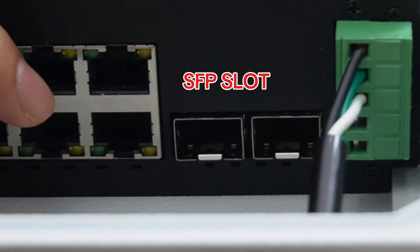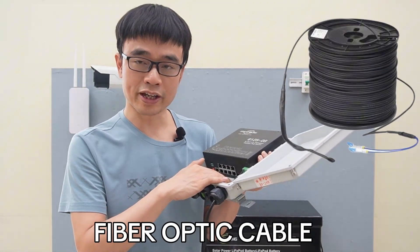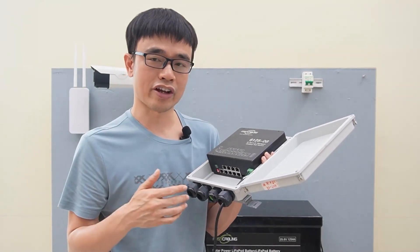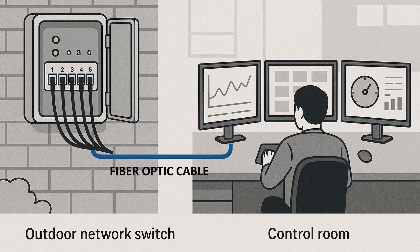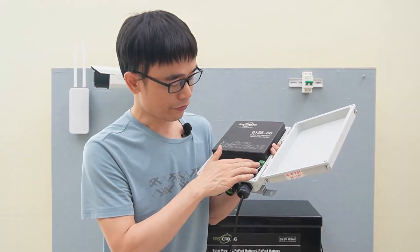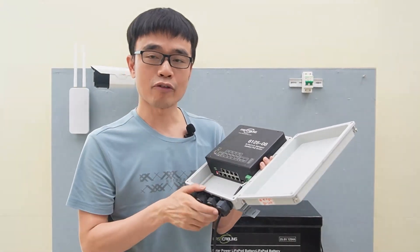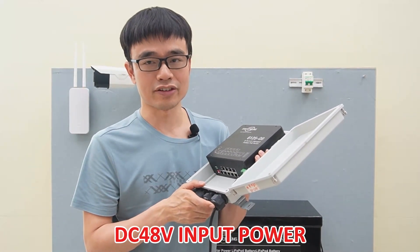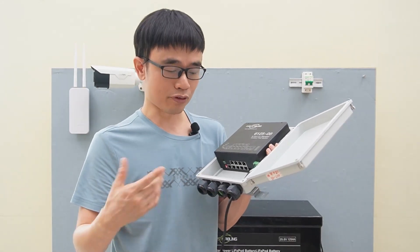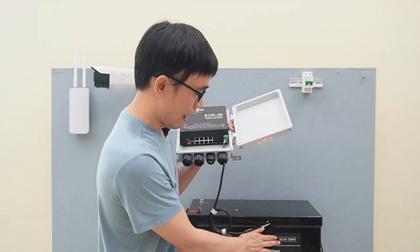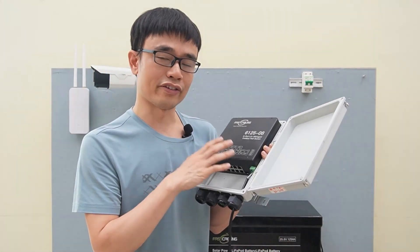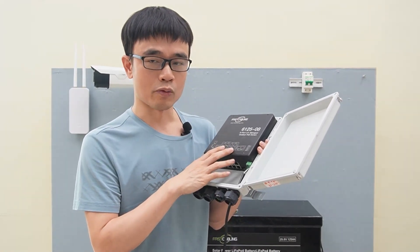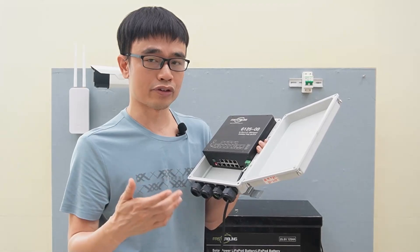These two are the SFP slots. We plan to use fiber optic cable. The SFP slots are designed for the fiber optic cable. We will use the fiber optic cable to link this PoE switch back to the control room. This is the power input. This outdoor PoE switch accepts DC 48V. I guess you already noticed the voltage output from the battery doesn't match the voltage input this PoE switch requires. We will use another device to convert the voltage.